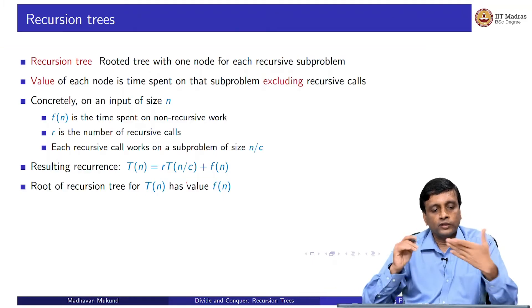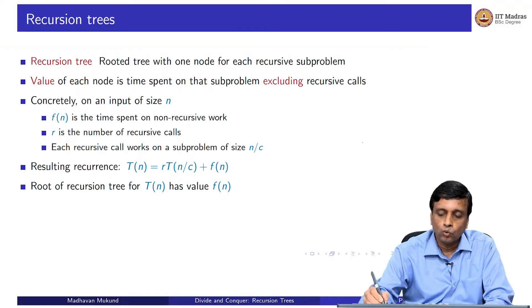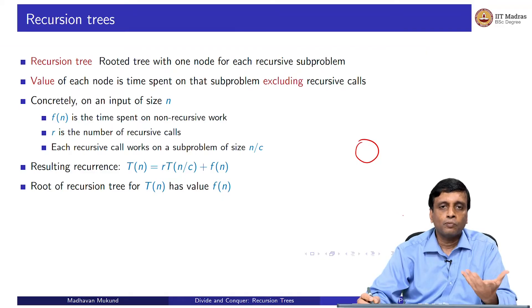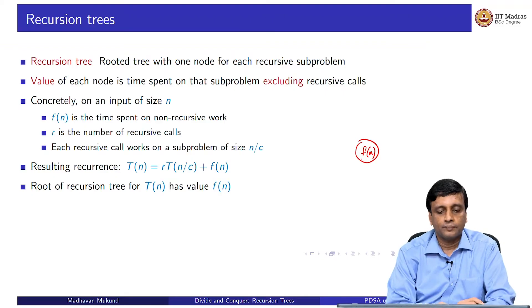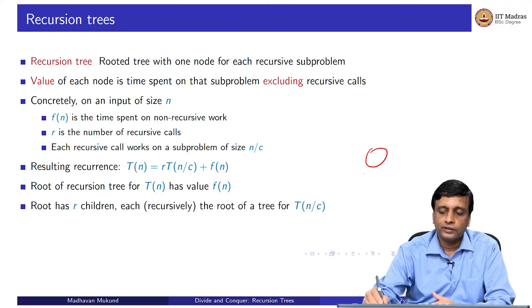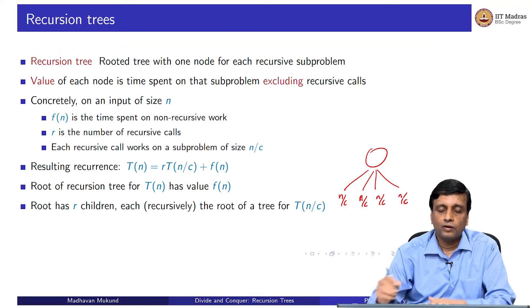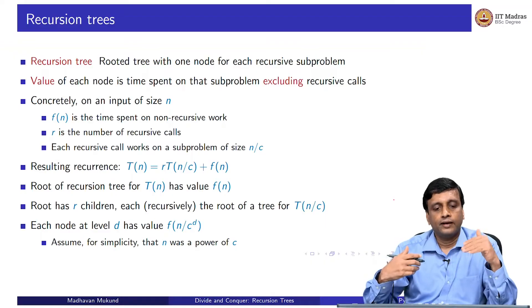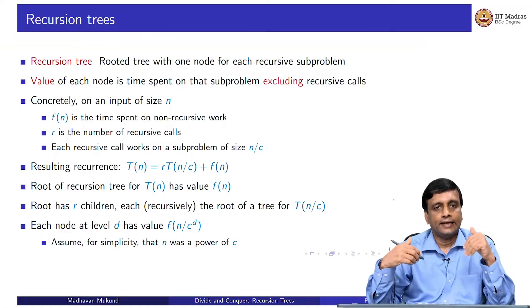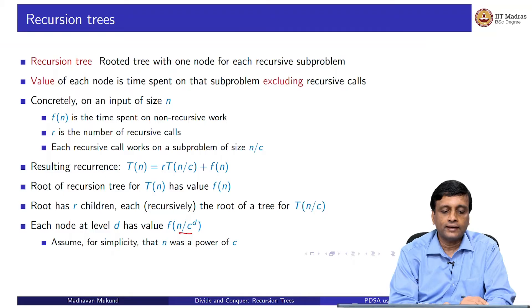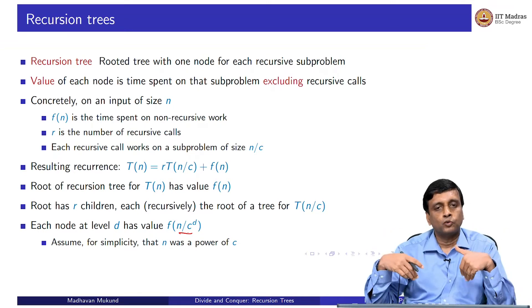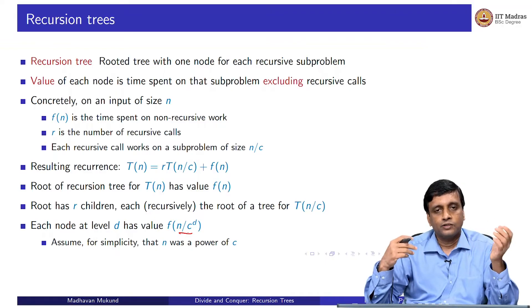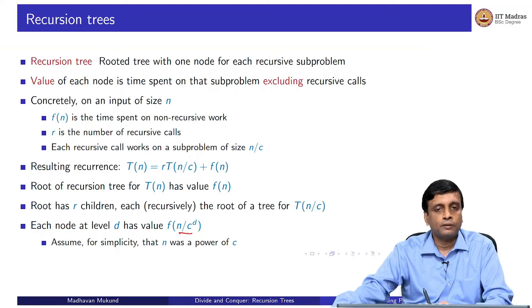If we draw the recursion tree, the root represents the original problem labeled with cost f(n), and it has r children. At level 1 we have r nodes each with cost f(n/c). Going down d steps, the subproblem size is n/c^d and the cost per node is f(n/c^d). We assume the tree goes down to size 1, meaning c^d eventually equals n, so d = log_c(n) levels total.